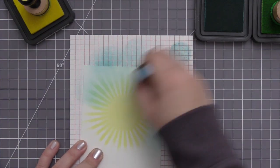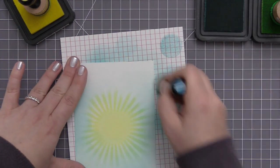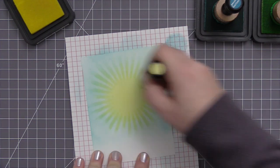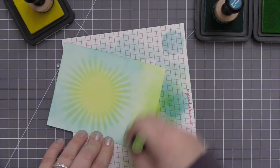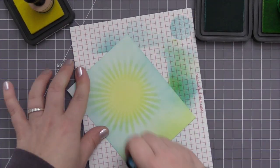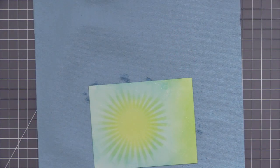I let it kind of fade off towards the edges and then once I had enough to complete the sun, I'm now switching over to peacock feathers distress ink and adding some blue around the sun just to give the look of sky and some twisted citron to the bottom to give the look of grass.